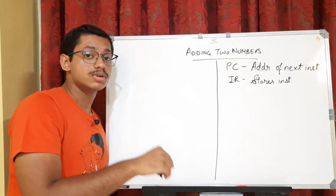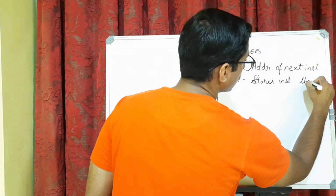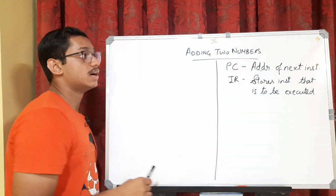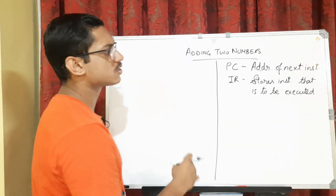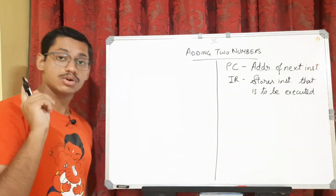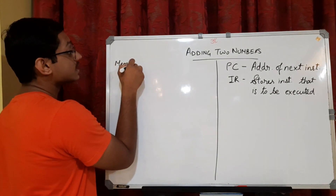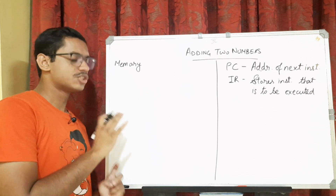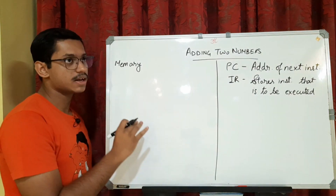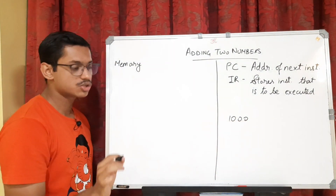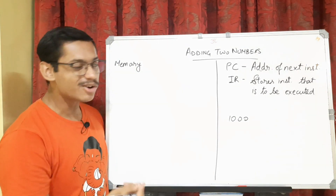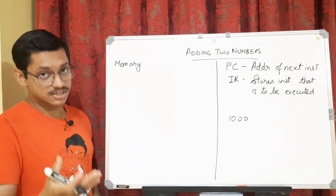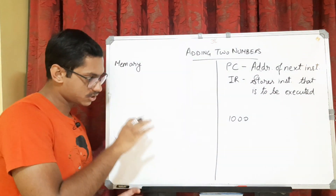So the program counter stores the address of the next instruction and the IR (instruction register) stores the instruction that is to be executed right now. In memory, we store both data and instructions. Generally, instructions are stored at the top part — in the first half — and data is stored in the latter half. Suppose memory has a thousand spaces; in one space you can store either data or an instruction.